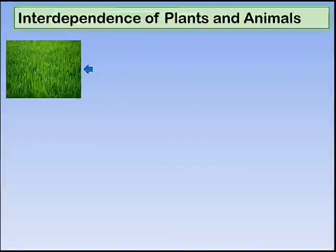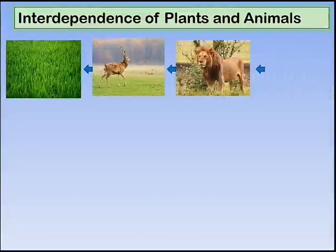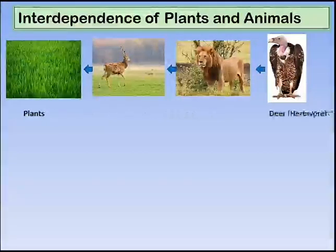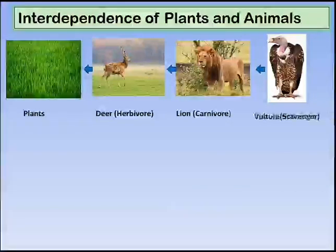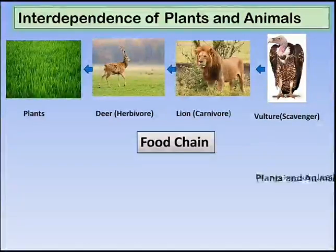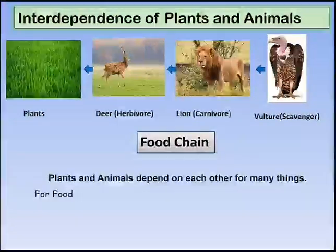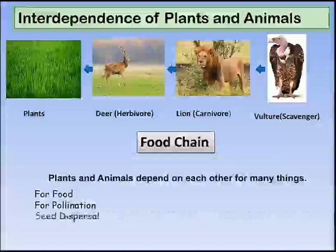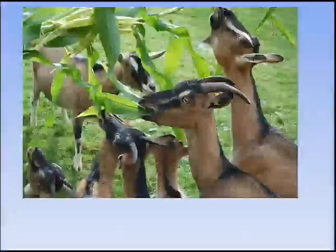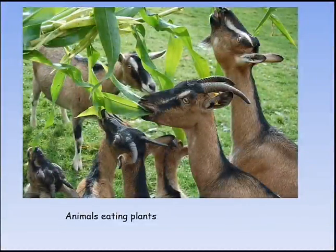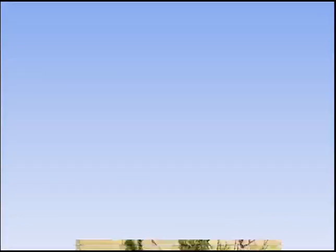Here the picture shows a food chain. Plants and animals depend on each other for food, pollination, and seed dispersal. Some animals eat plants — these are called herbivores. Some animals eat the flesh of other animals — these are called carnivores.